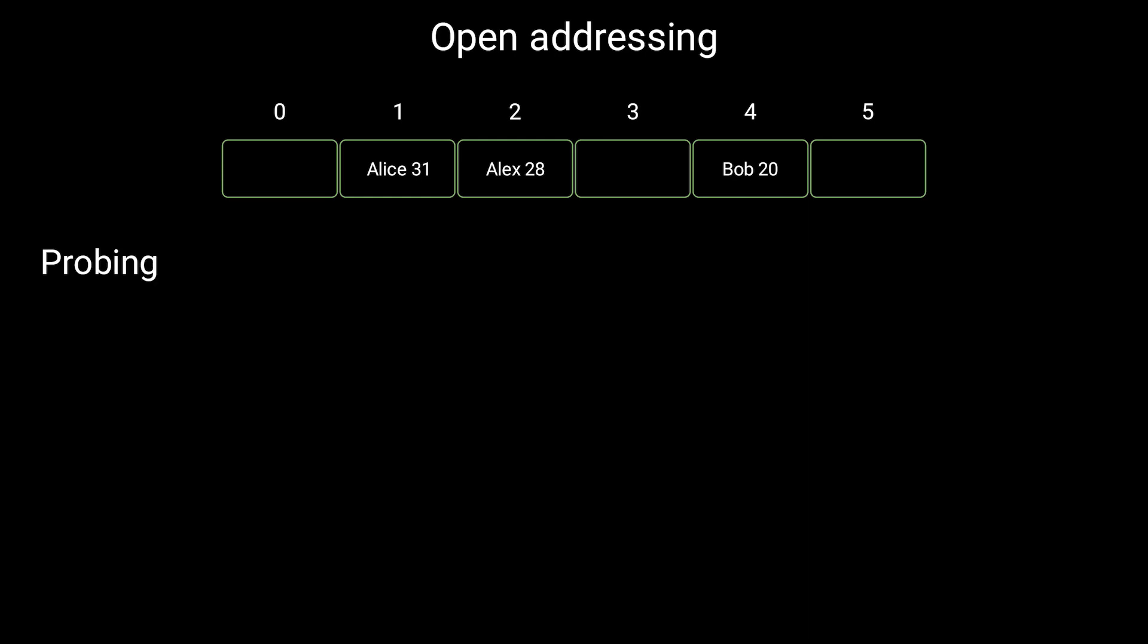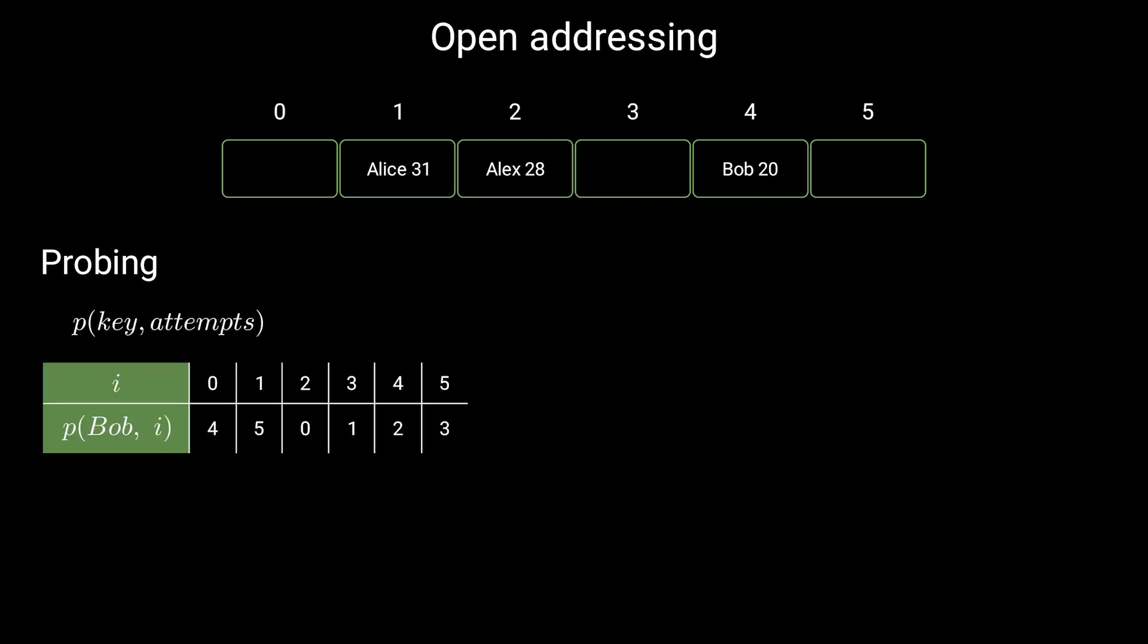This process is called probing. Instead of using a hash function that takes just the key, we create a new function, let's call it probing, that takes the key and the number of attempts so far. The idea is that the probing function returns a different result for each attempt, even if the key doesn't change.